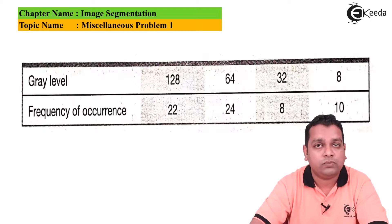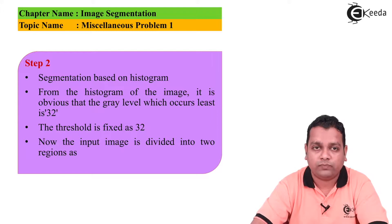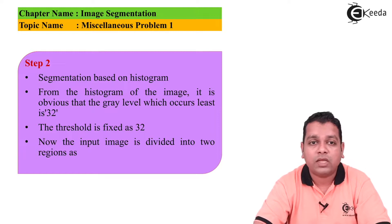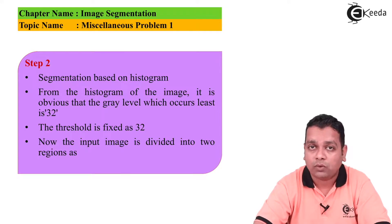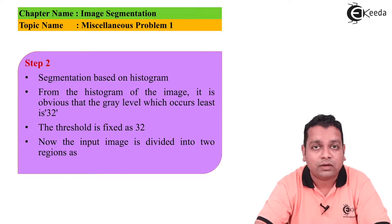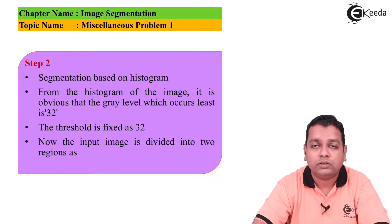Step two is segmentation based on the histogram. From the histogram, it is very obvious that the gray level which occurs least is the value 32. We can therefore select 32 as the threshold value. Generally, for a bimodal histogram, we place the threshold at the valley point. We apply the condition that pixel values with intensities greater than the threshold are accommodated into region one, and pixel values less than the threshold are accommodated into region two. The threshold selected is 32.